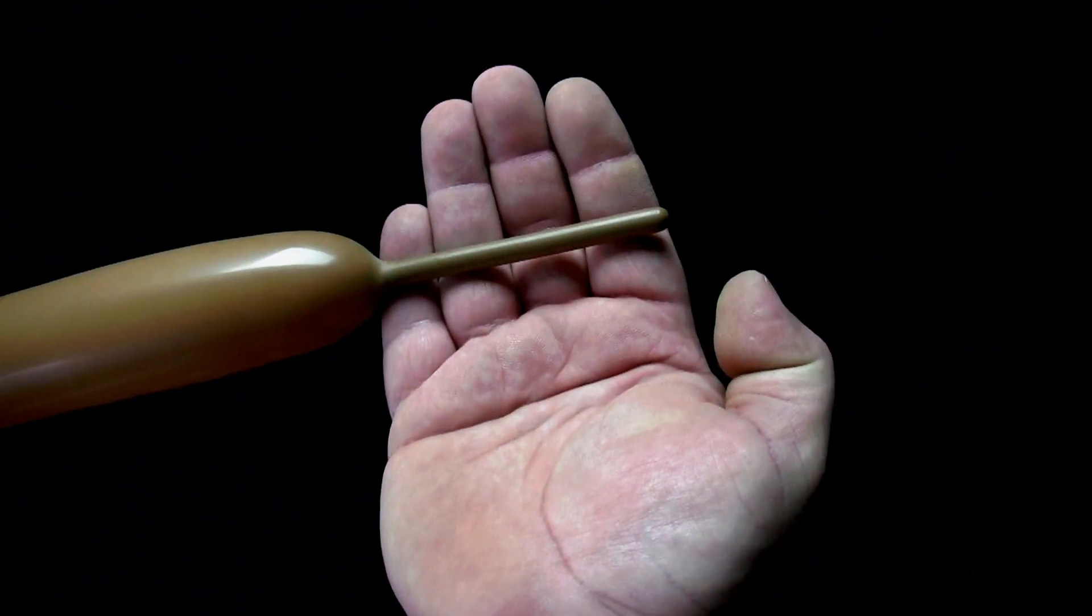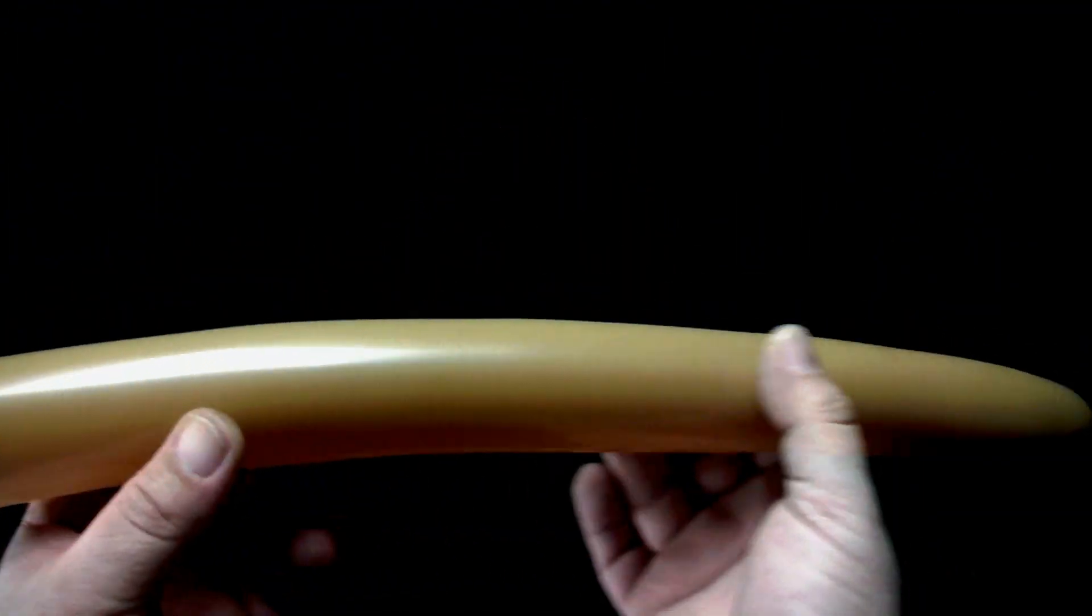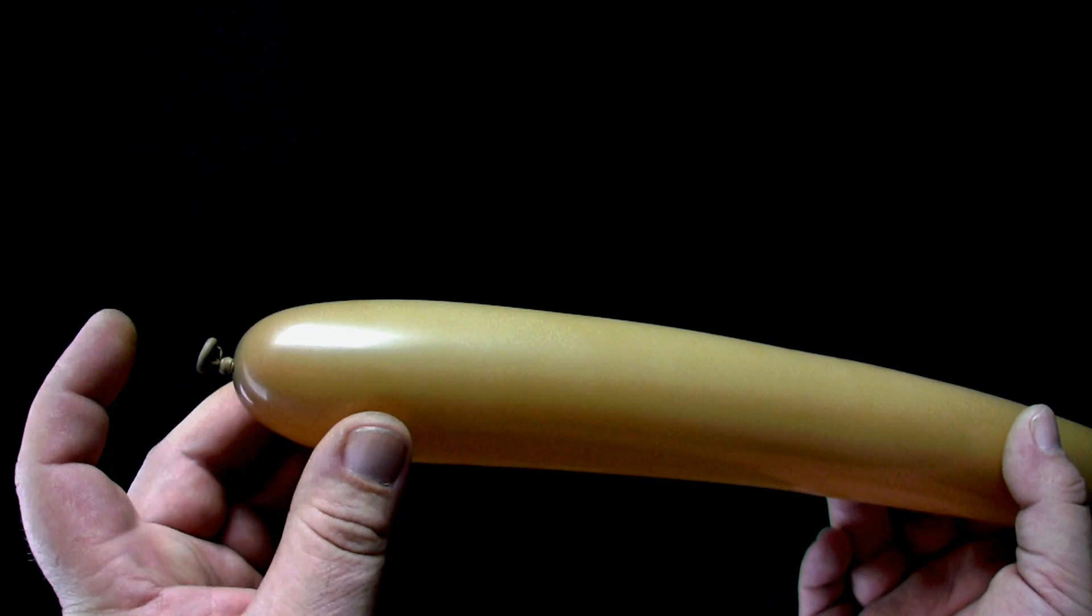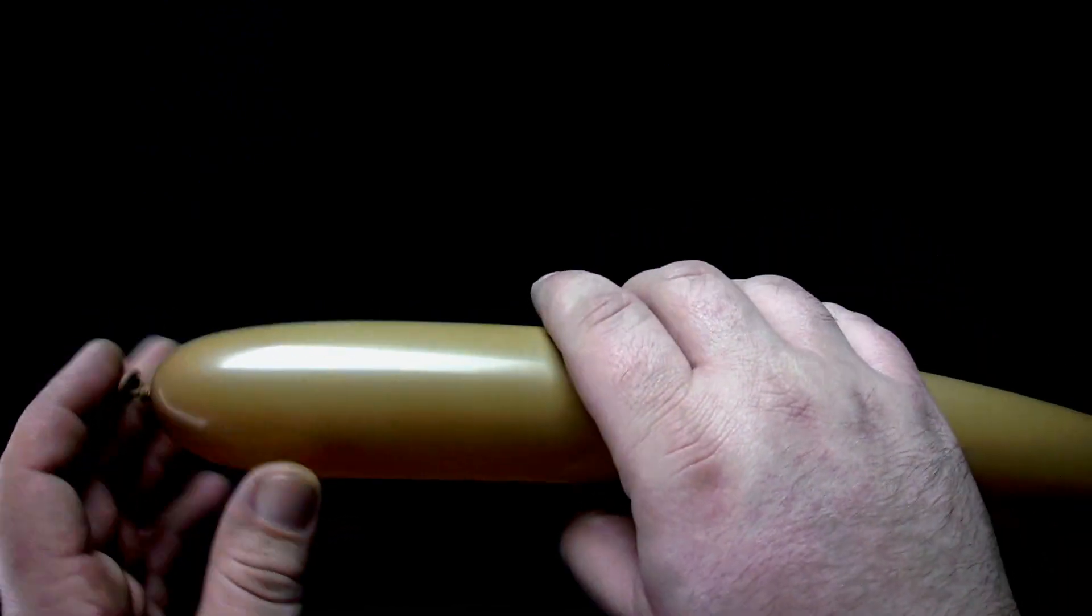You will want your balloon filled with about four fingers width left over at the end. Start twisting your design at the nozzle end of the balloon.